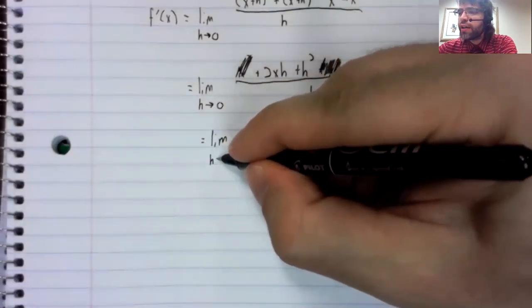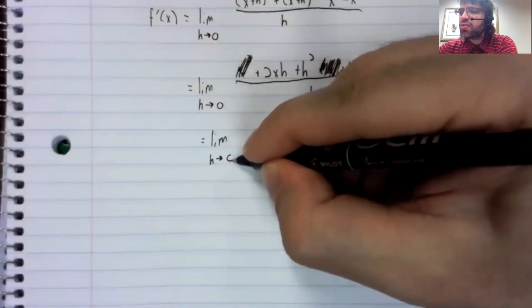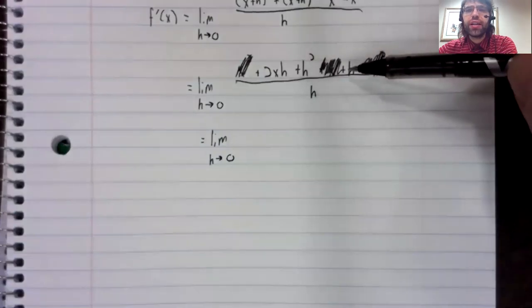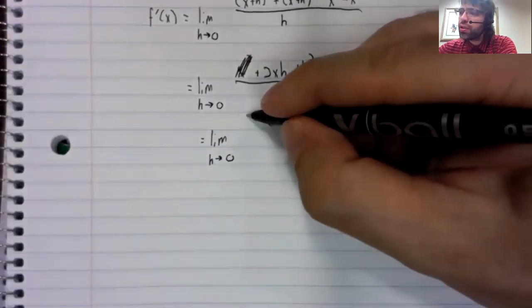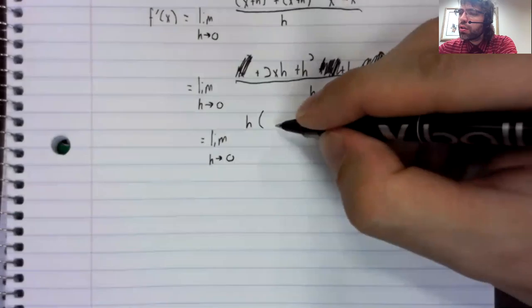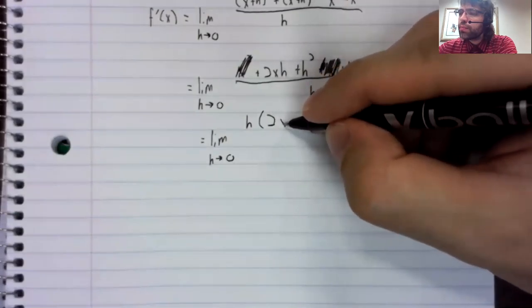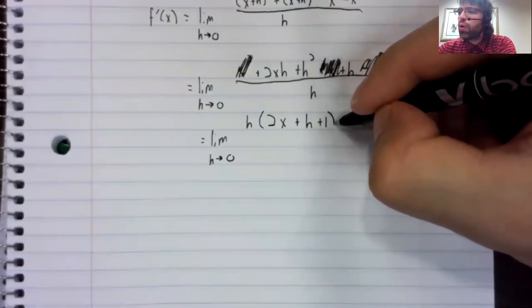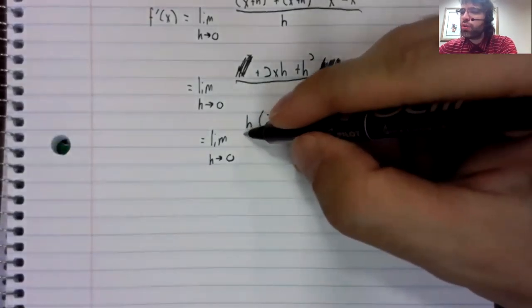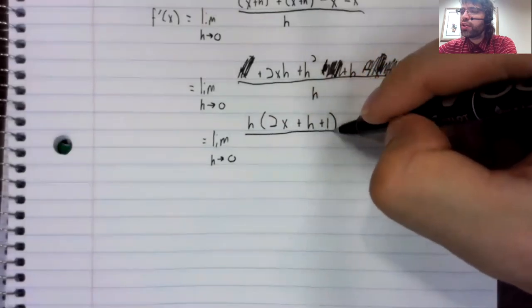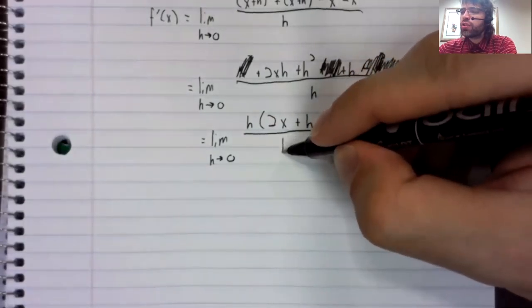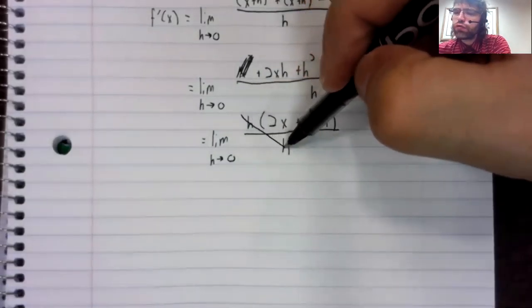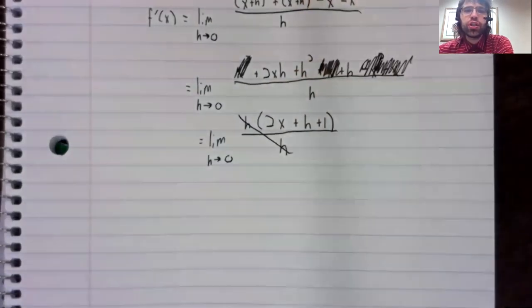So what I see next is that we have an h, an h, an h, and an h. We can pull an h out of the numerator. And what's the point of that? That's going to let us get rid of the h in the denominator.